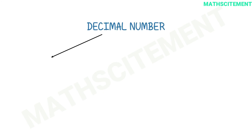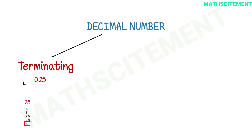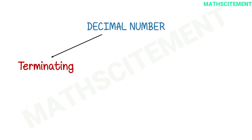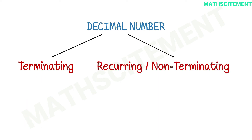Let us recap what we have learned. There are two kinds of decimal numbers. The first is called terminating — terminating decimal numbers are those in which the decimal part does not repeat forever but stops after certain decimal places. The second kind is called non-terminating or recurring decimal numbers, in which the digit part repeats infinitely.